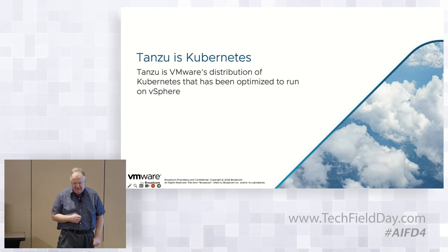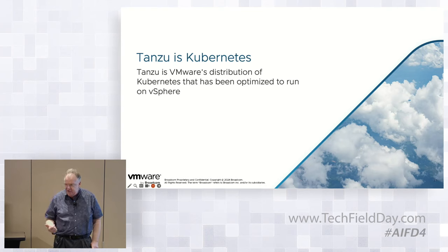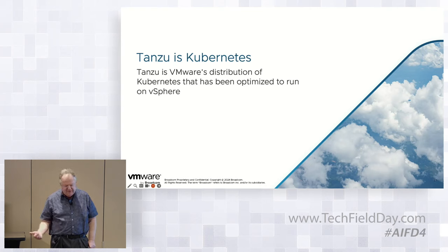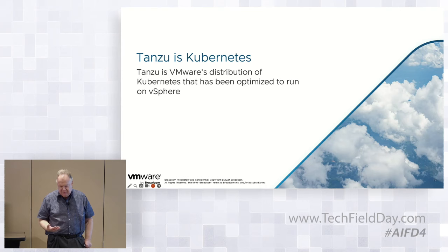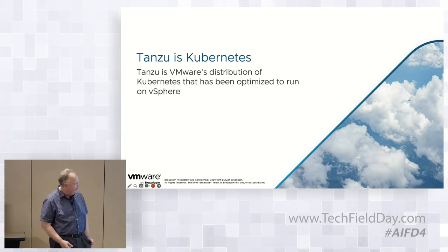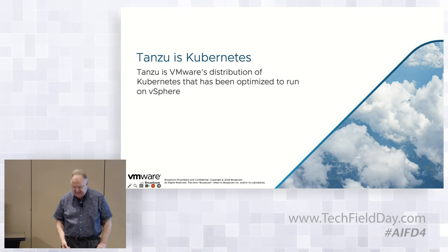Tanzu is VMware's distribution of Kubernetes, optimized to run on vSphere. It takes advantage of vSphere's lifecycle management tools so you can manage Kubernetes deployments and upgrades. It includes vSAN for storage, NSX for network micro-segmentation and security, VMware AVI for high-availability load balancing, and DRS for adding, removing, or upgrading hosts without impacting the running Kubernetes cluster.